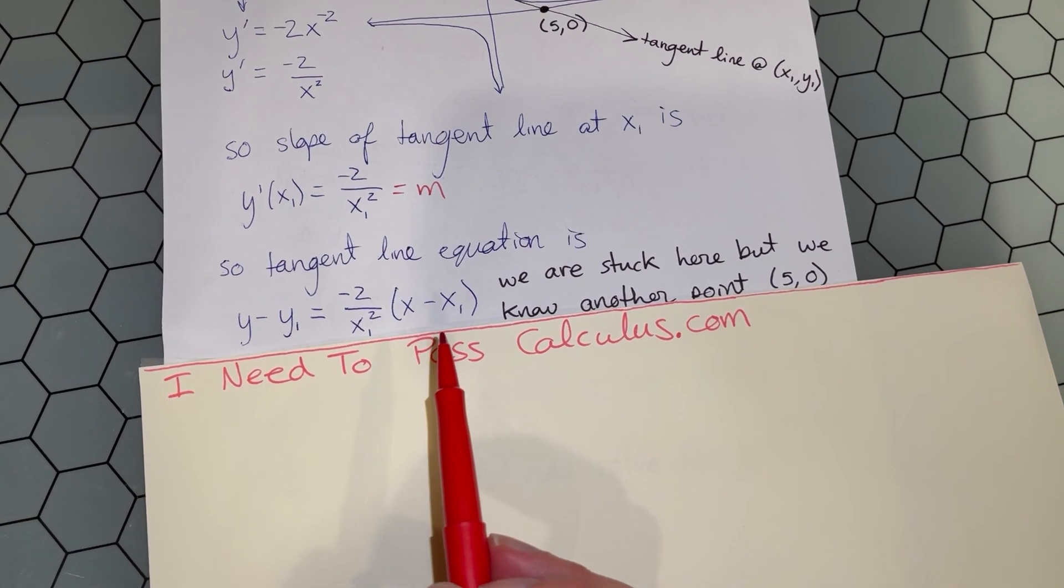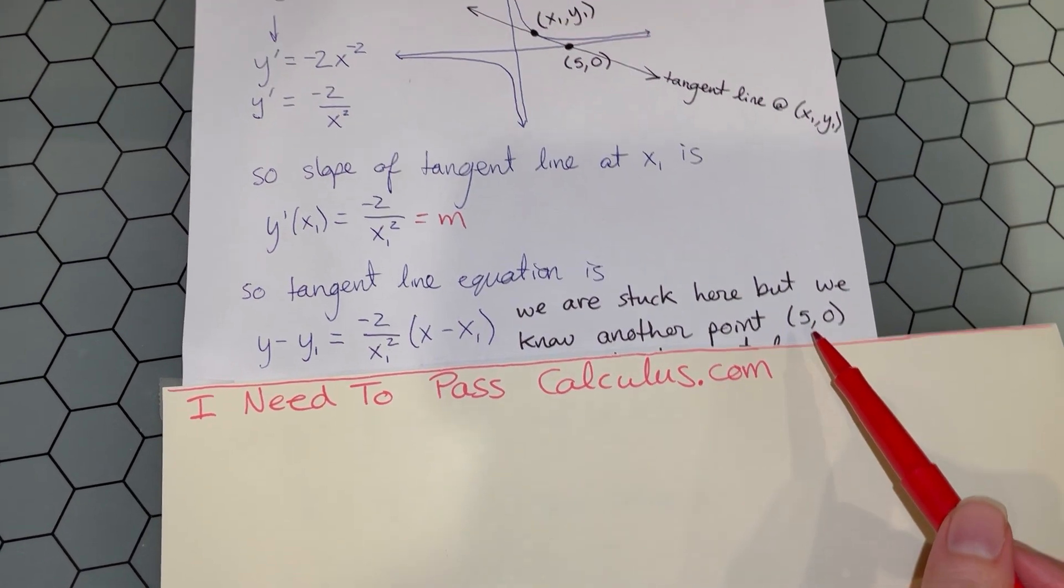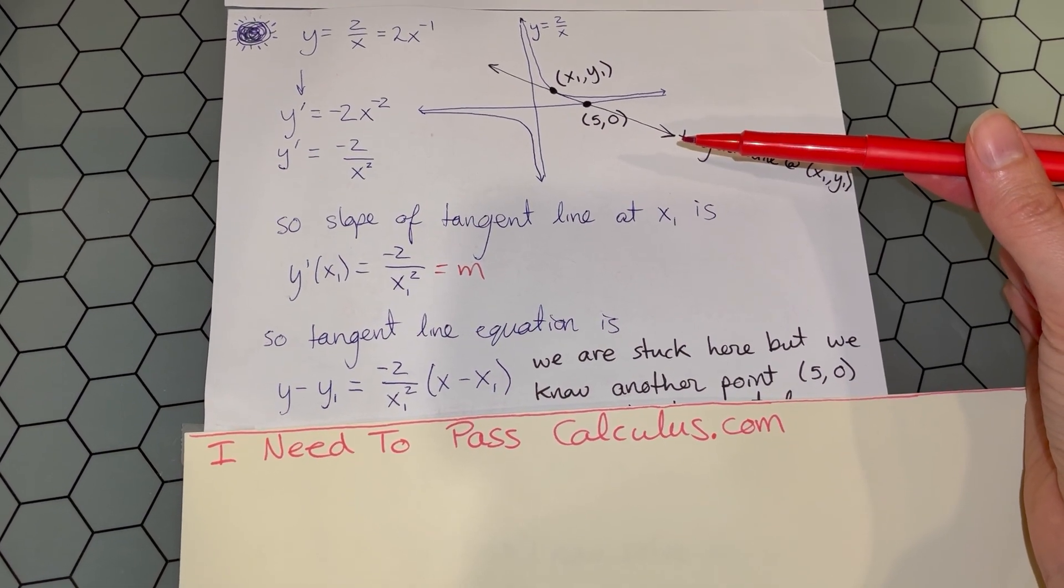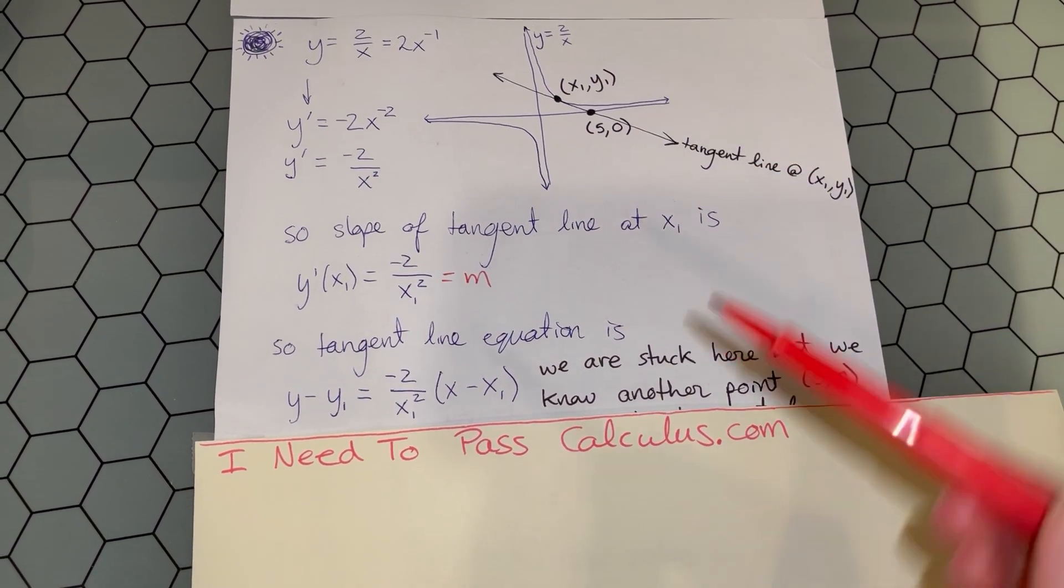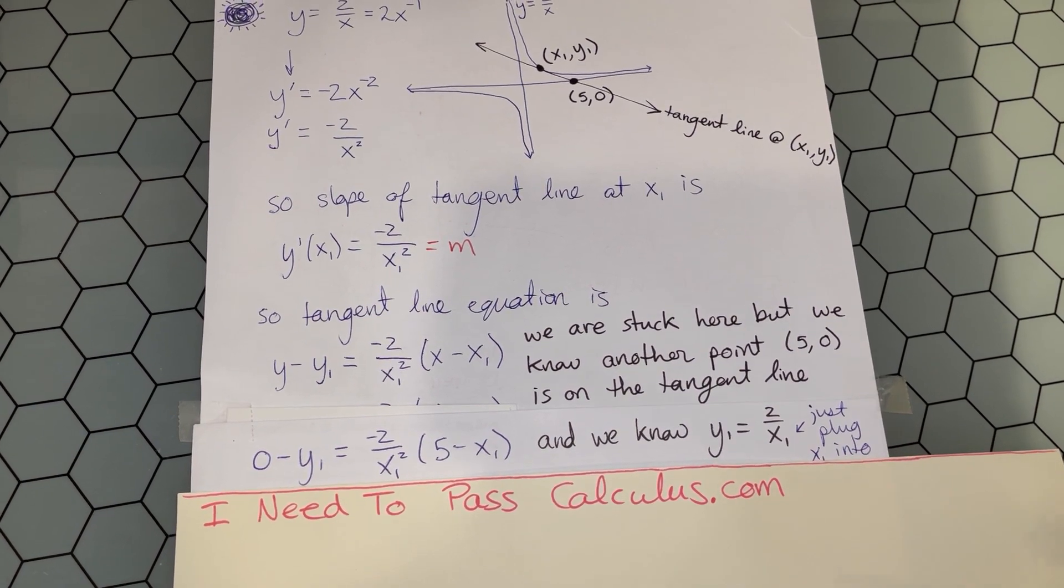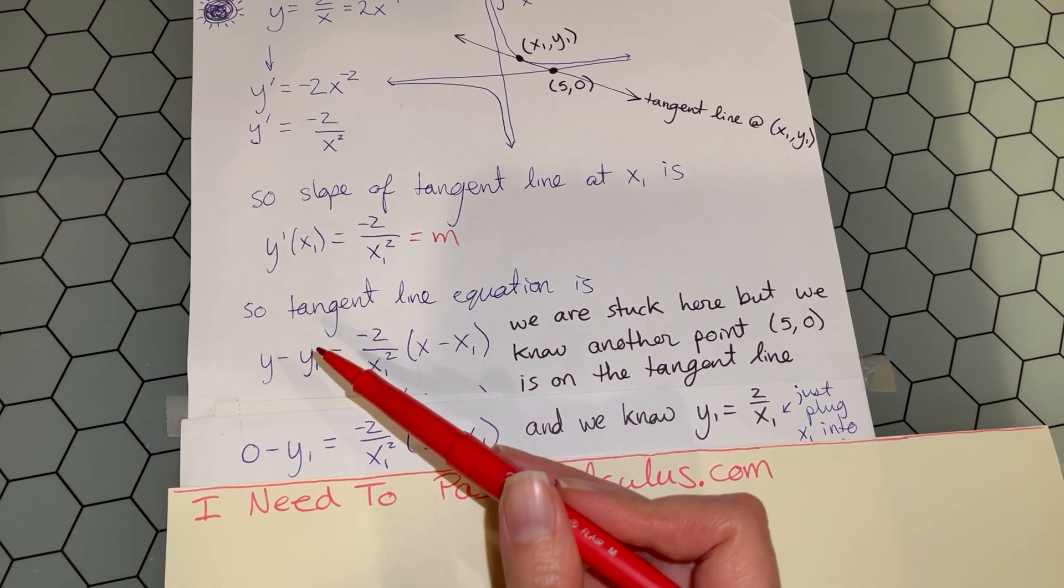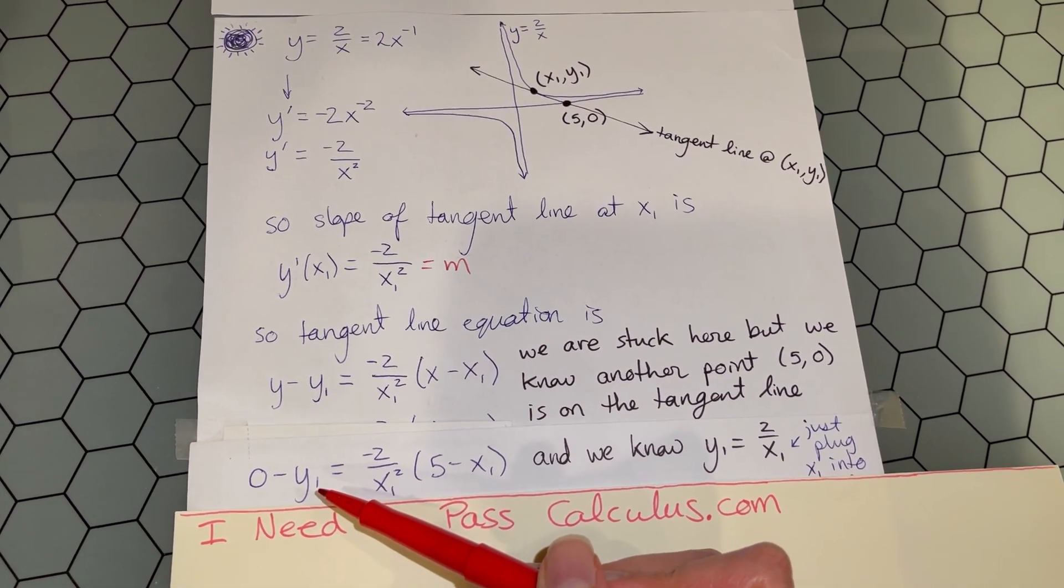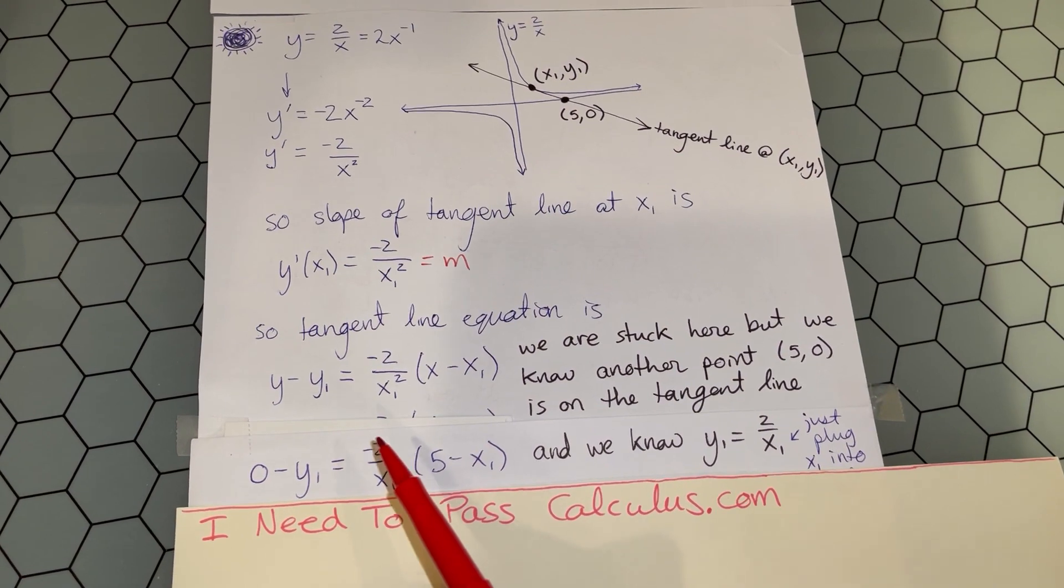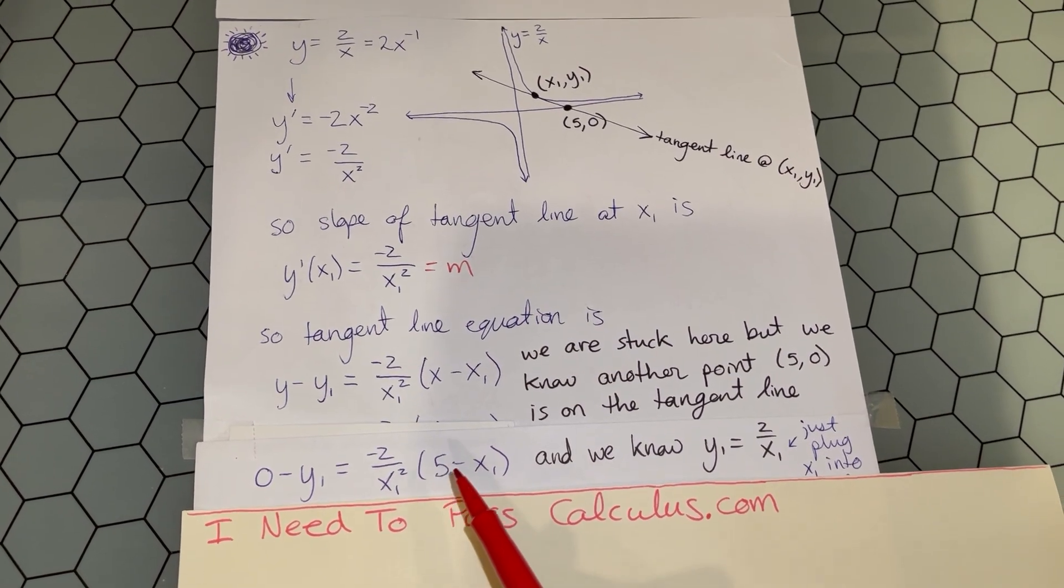This looks a bit wild with a lot of unknowns, but we do know one other point that has to be on the tangent line. Any point on the line should satisfy the equation of the line. So we can plug in the point (5, 0) that we know is on our tangent line. The y-coordinate is 0, y₁ stays as y₁, representing the unknown y-coordinate where we're building our tangent line. Here's our slope again, and the x-coordinate is 5, so we have (5 - x₁).